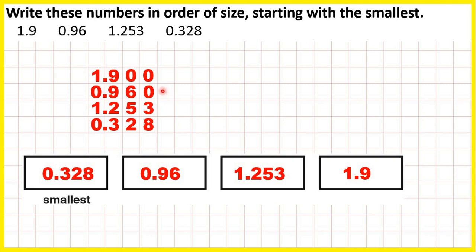I find it easier to write the numbers out one below the other with decimal points lined up, then write zeros in empty squares. But what you could do to save time is write zeros on the end of the numbers in the question. Then if the numbers have the same number of decimal places — here they all have 3 decimal places — that makes the numbers much easier to compare.